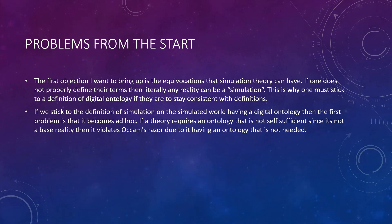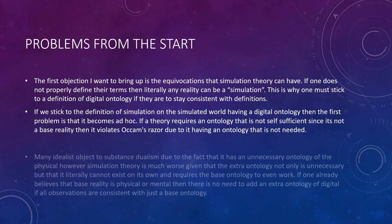If we stick to the definition of simulation — that the simulated world has a digital ontology — then the first problem is that it becomes ad hoc. If a theory requires an ontology that is not self-sufficient, since it's not a base reality, then it violates Occam's razor due to having an ontology that is not needed.